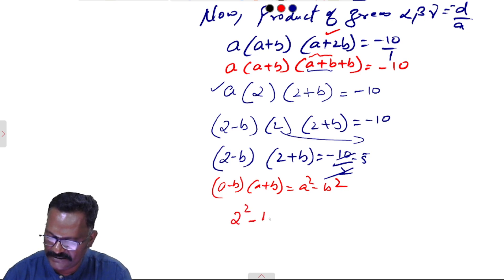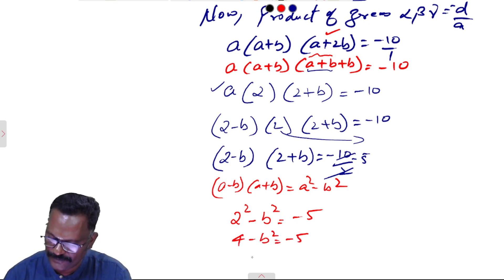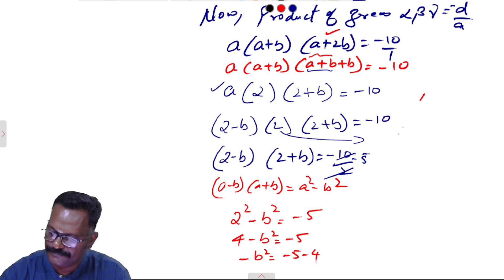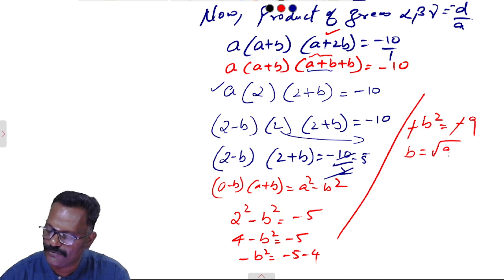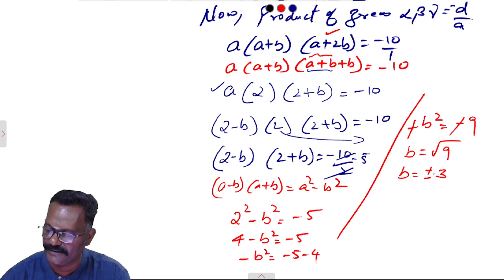Using the identity (a minus b)(a plus b) equals a square minus b square: 2 square minus b square equals minus 5. So 4 minus b square equals minus 5. Therefore minus b square equals minus 5 minus 4 equals minus 9, so b square equals 9. Thus b equals plus or minus 3.